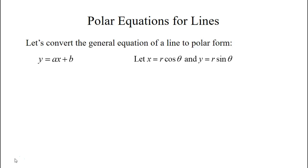We're going to change this to polar form by letting x equal r cosine theta and y equal r sine theta. So we have r sine theta equals ar cosine theta plus b.